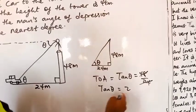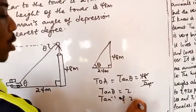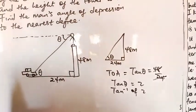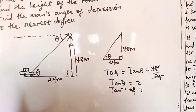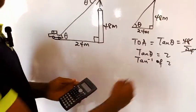So what we are going to do now is take the tan inverse of 2 to get his angle of depression. On your calculator, you type in shift then tan. That brings tan inverse of 2.